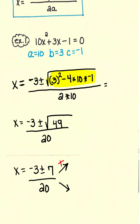So we must do the plus and we must do the minus. Negative 3 plus 7 over 20 is going to be 4 over 20 or reduced to 1 fifth. And then negative 3 minus 7 over 20, which is negative 10 over 20 or negative 1 half.